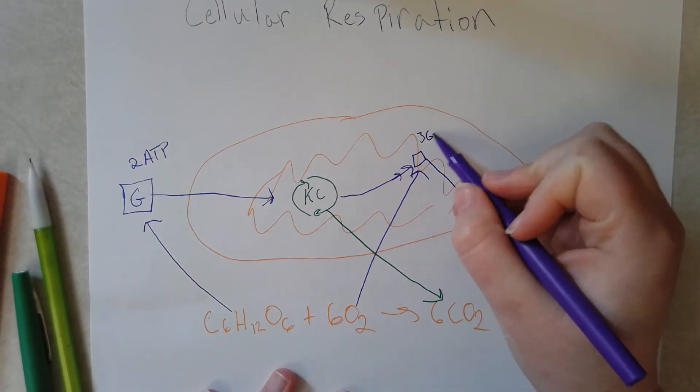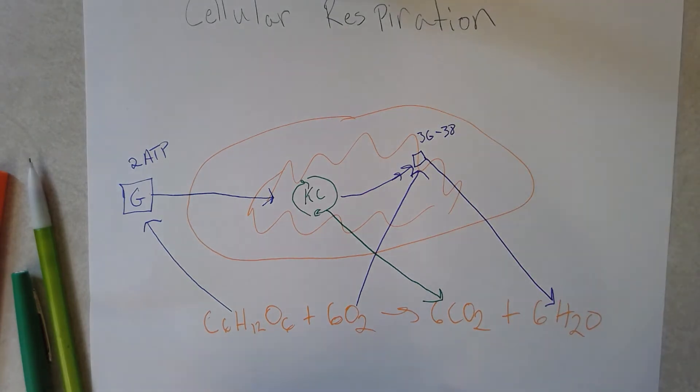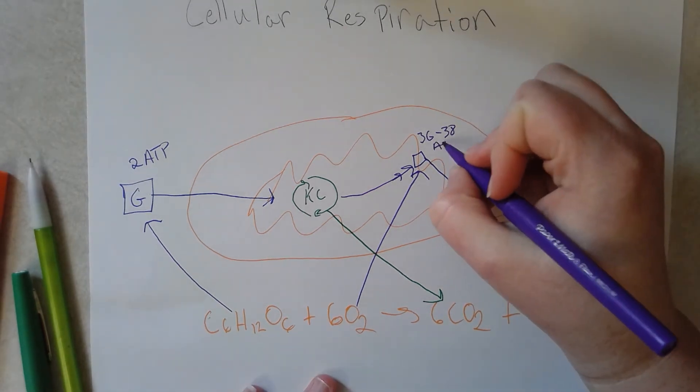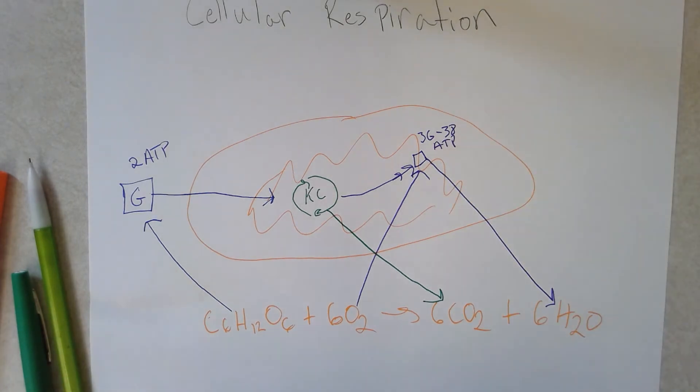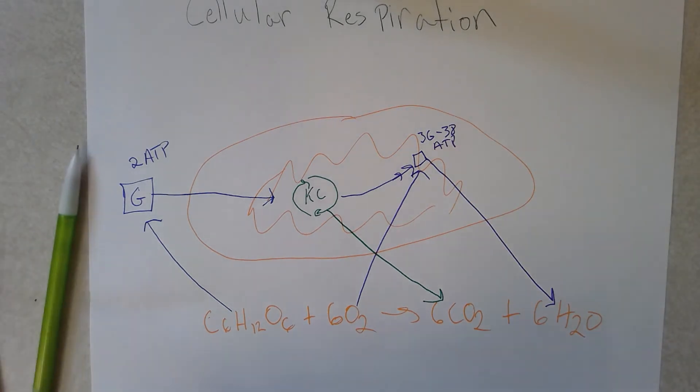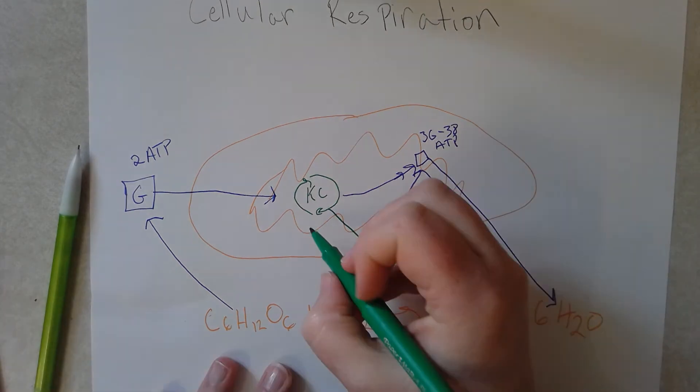36 to 38, and that's in like a perfect world. Typically it's not running this efficiently. And you also get two ATP here.